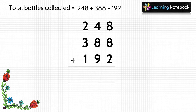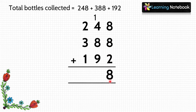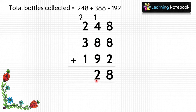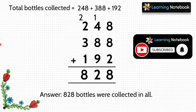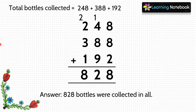Write the numbers in columns and start adding from the ones place. 8 plus 8 plus 2 equals 18 — write 8, carry 1 to the tens place. At tens place: 1 carry plus 4 plus 8 plus 9 equals 22 — write 2, carry 2. At hundreds place: 2 carry plus 2 plus 3 plus 1 equals 8. Answer is 828. So 828 bottles were collected in all.